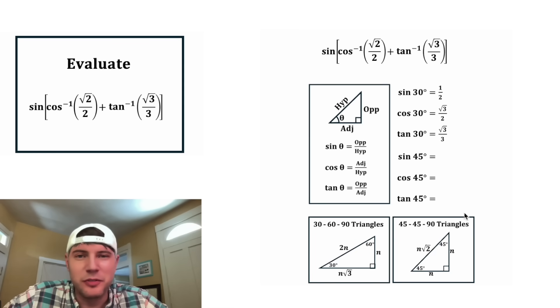And we could do the same thing for 45 degrees. The sine of 45 will be opposite over hypotenuse, which will be one over the square root of two. And then the cosine is adjacent over hypotenuse, which will also be one over the square root of two. And the tangent will be opposite over adjacent. And since these match, it'll be equal to one.